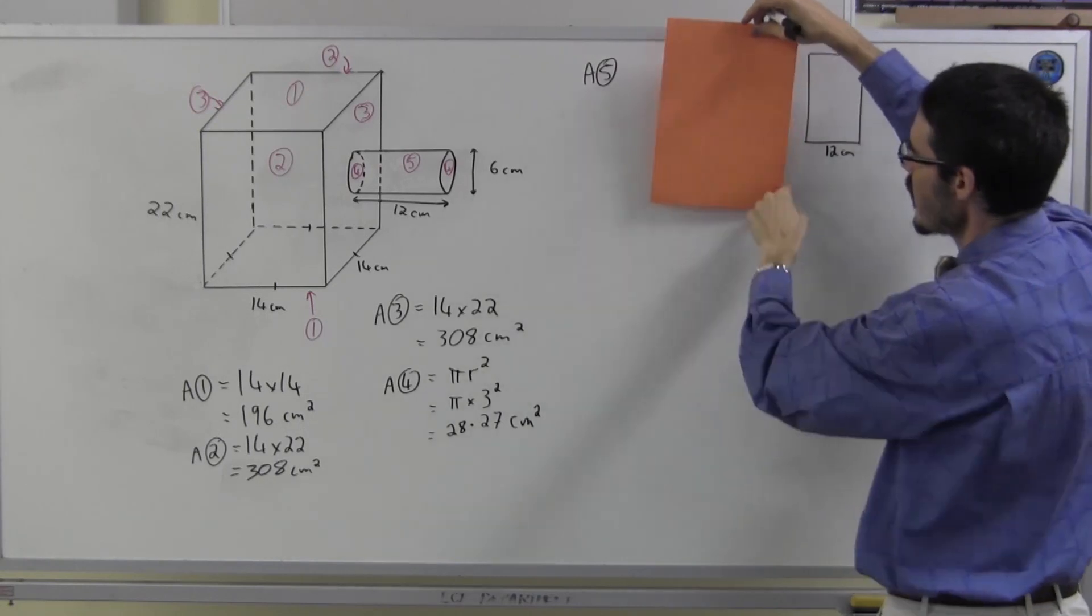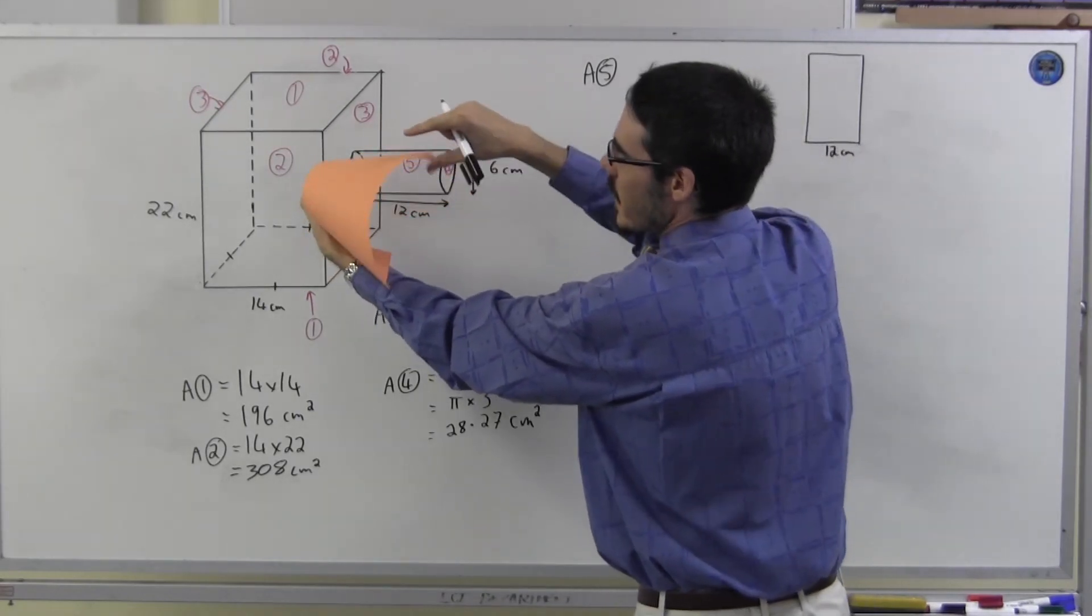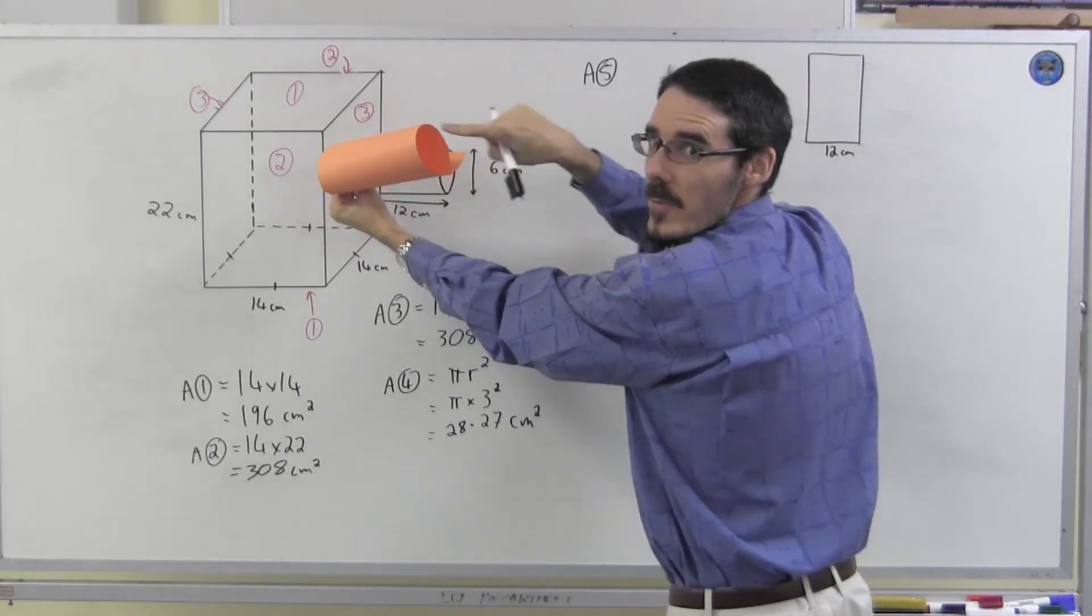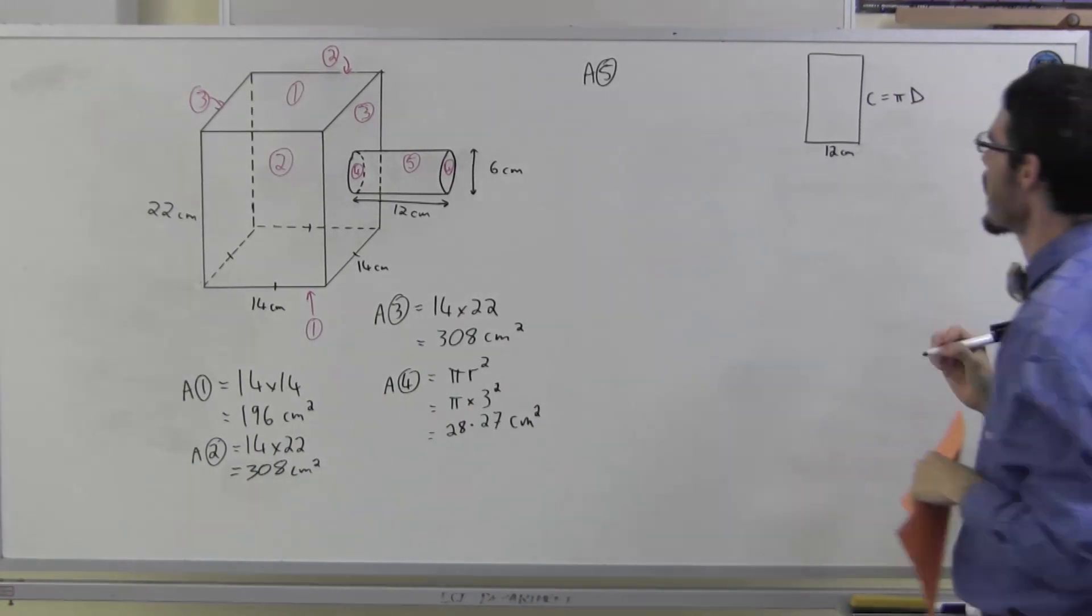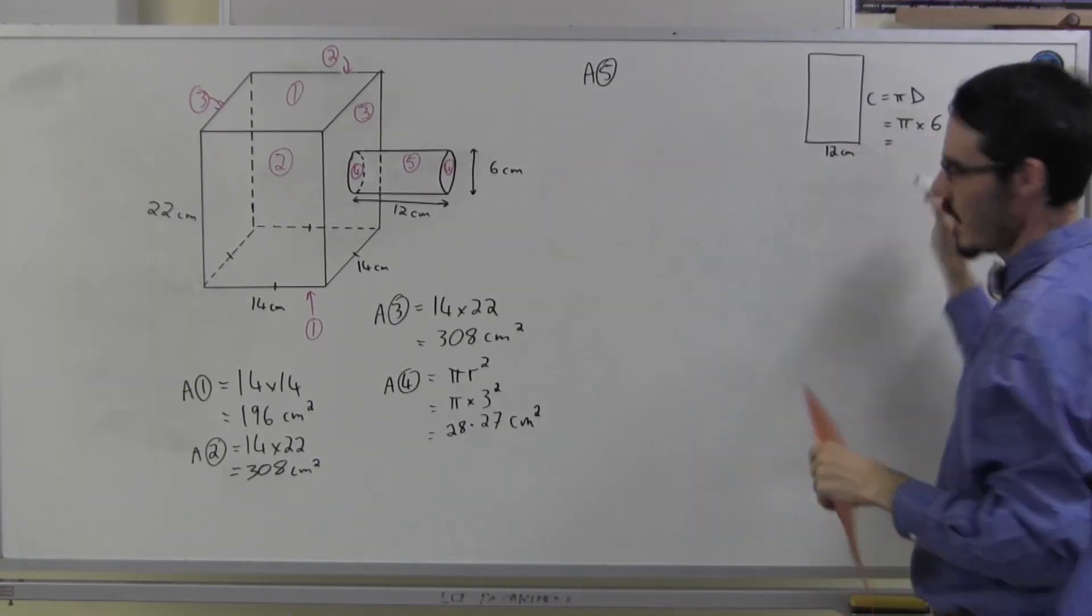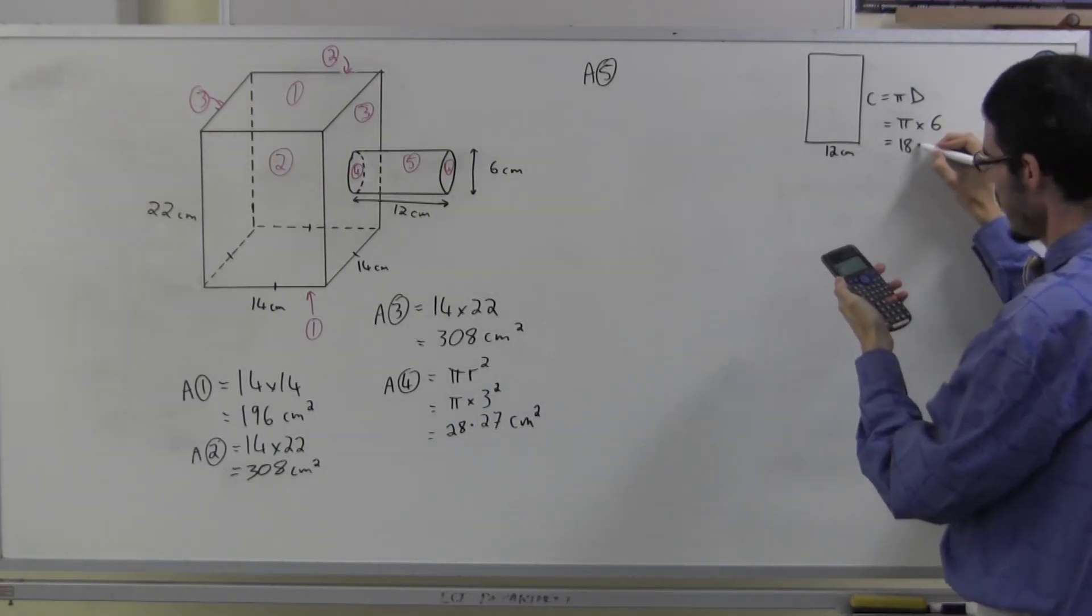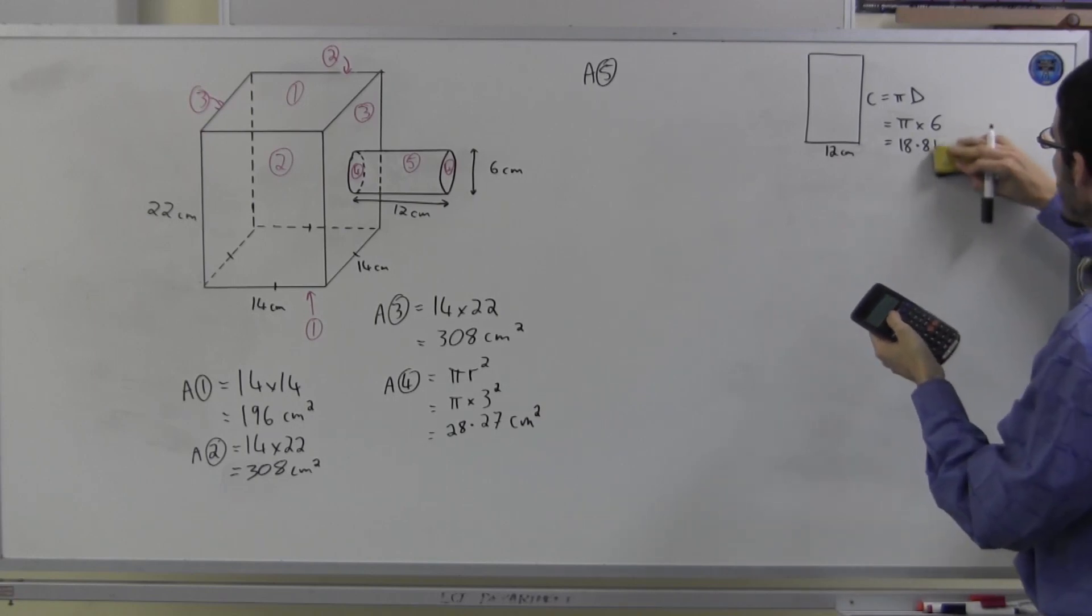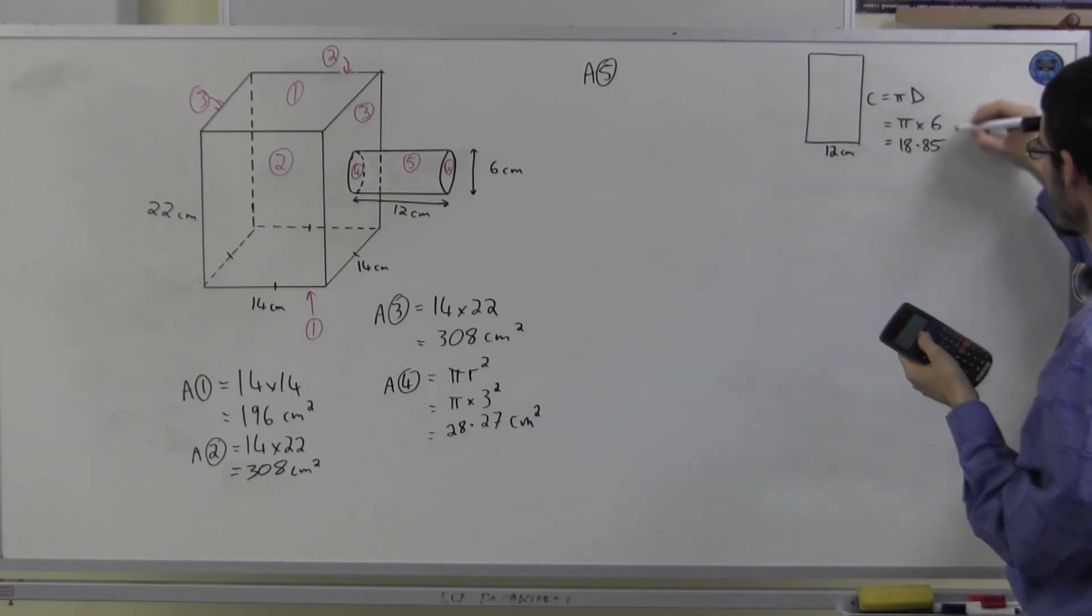This length of that rectangle is what part of the cylinder? It's this length, isn't it? See that? That means it's actually the circumference of the circle. This is the circumference, π times diameter. Well, let's work that out. The diameter was 6. I certainly don't know my π times tables. π times 6, 18.8. I'm going to round to two decimal places. It's 18.849. So I'm going to round that up to 18.85. Now this is a length, centimetres.